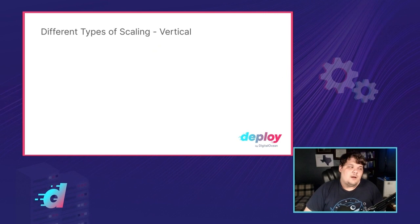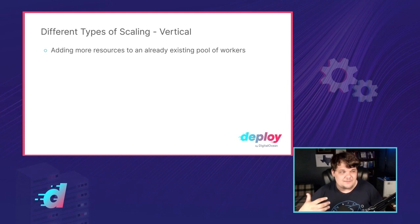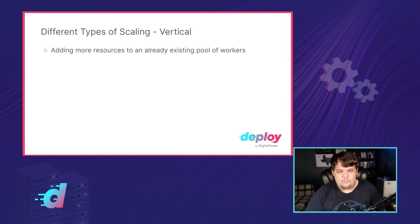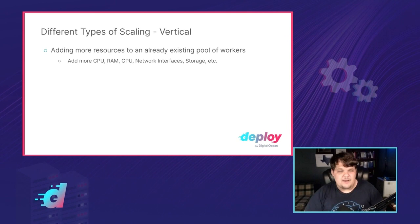The other type of scaling is vertical scaling. Vertical scaling is adding more resources to an already existing pool of workers — specifically to the VMs or the machine itself. This is giving it more power: adding more CPUs, more RAM, more GPUs, maybe more network interfaces, or more storage because it has a large on-disk cache.